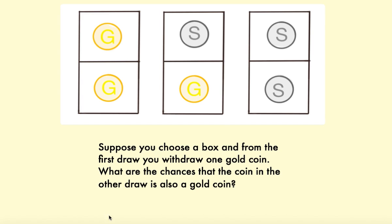The situation goes like this. On a table there are three boxes. Each box has two drawers in it.